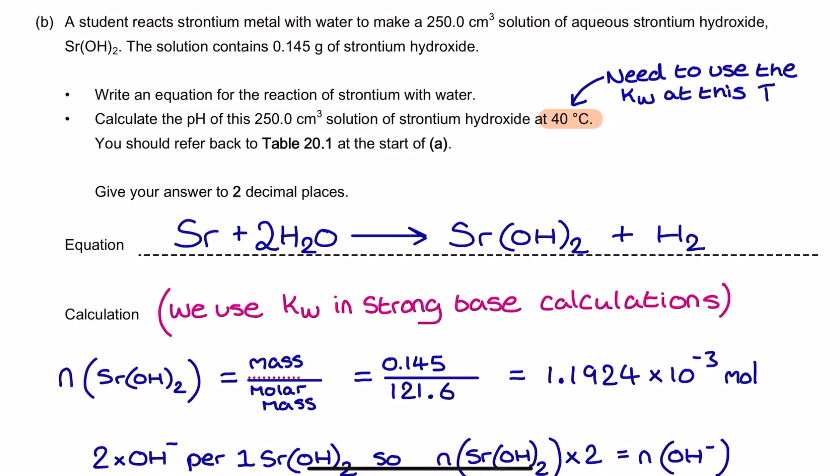The final part of this exam question is going in a different direction, and we're going to be using KW to calculate the pH of a strong base at a different temperature. So once again, we're going to be using the KW value for 40 degrees C from the previous part of the question. A student reacts strontium metal with water to make a 250 cm3 solution of aqueous strontium hydroxide. The solution contains 0.145 grams of strontium hydroxide. The question has got these two sections: write an equation for the reaction of strontium with water, and then calculate the pH of the strontium hydroxide solution. Now, the first part, the equation, is from the group 2 alkaline earth metal topic, which is in module 3 on the OCR-A specification.